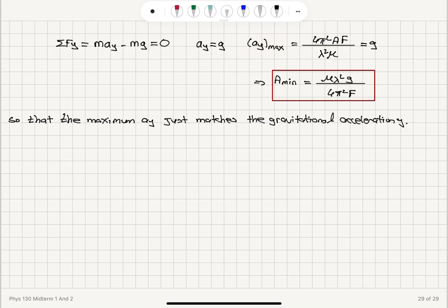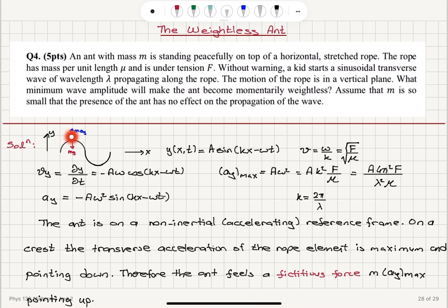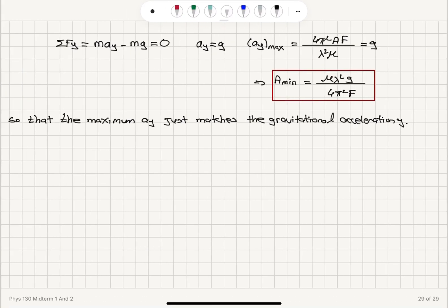The maximum transverse acceleration, 4π² amplitude f over λ² μ is equal to g, so that the minimum amplitude that will allow this situation to occur is μ λ² g over 4π² F.